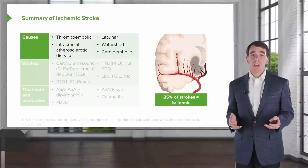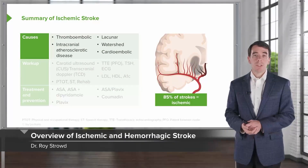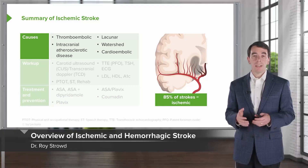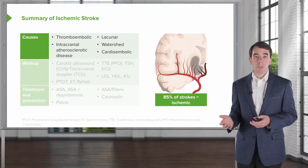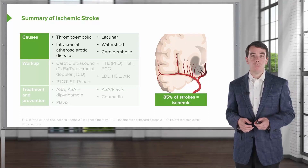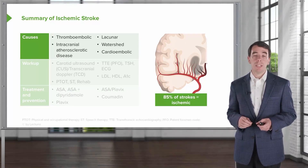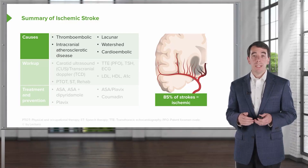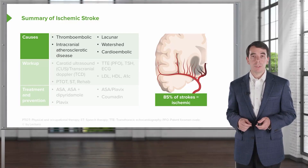Let's do a quick summary of ischemic stroke and hemorrhagic stroke. We're going to hit the highlights for the causes, the diagnostic workup, and treatment for each of these two major types of stroke. In subsequent lectures, we'll dive deep into each of these. Here, we're going to go through some tables that hit the highlights.